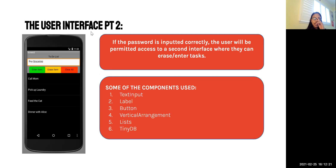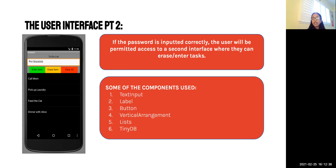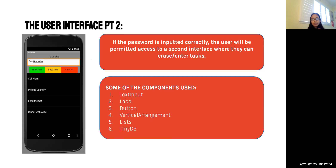This is what the second screen looks like. If the password is inputted correctly on the last screen, the user will be permitted access to a second interface where they can erase or enter tasks. Some of the components to use are text input, label, button, vertical arrangement, lists, and TinyDB. You probably know what the first four are from past experience. The fifth and sixth might be a little foreign, but we're definitely going to be covering them.